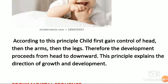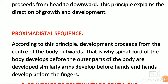This principle explains the direction of growth and development. The second direction is proximodistal sequence. Proximodistal means development proceeds from the center of the body outwards. That is why the spinal cord develops before the outer parts of the body. Similarly, arms develop before hands, and hands develop before fingers.